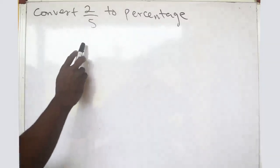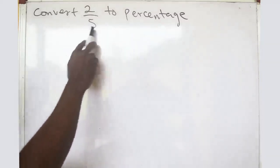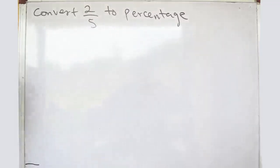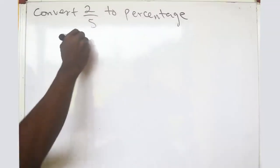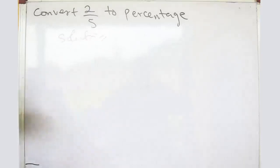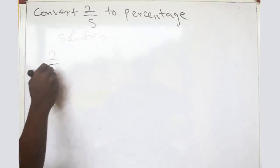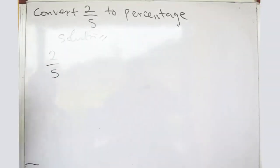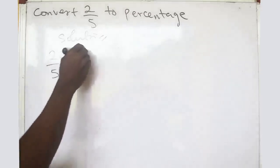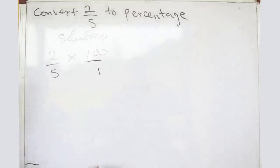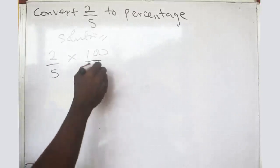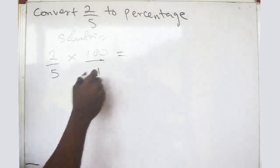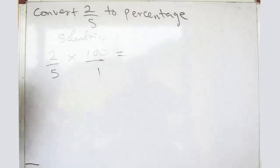As you can see, this is a fraction — how do you go from this to a percentage? To convert a fraction to a percentage, all you need to do is multiply by one hundred divided by one.